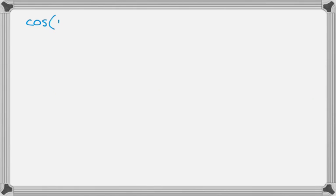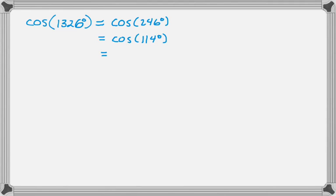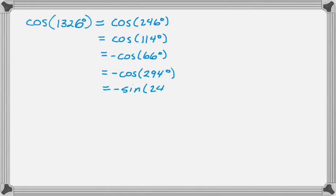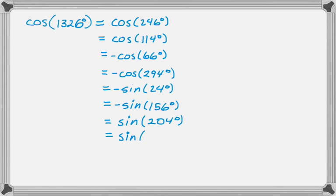In summary, I rewrote cosine of 1,326 degrees as: cosine of 246, cosine of 114, negative cosine of 66, negative cosine of 294, negative sine of 24, negative sine of 156, sine of 204, and sine of 336. This rewrites it in terms of sines and cosines of angles in each of the four quadrants — an exercise that makes you think about coterminal angles, reference angles, ASTC, and cofunction identities. I hope this was helpful, and good luck.